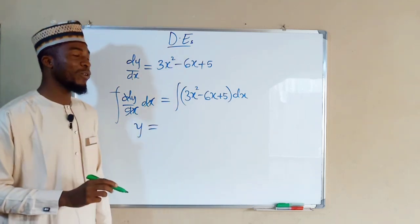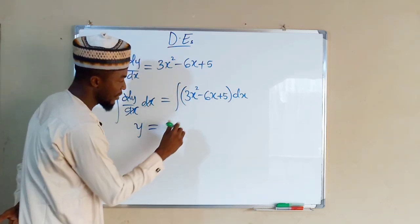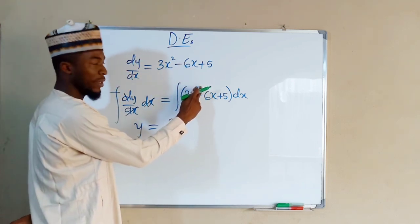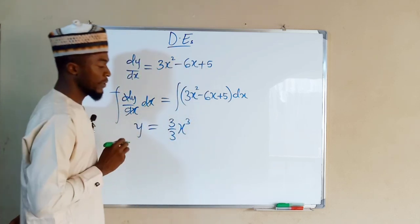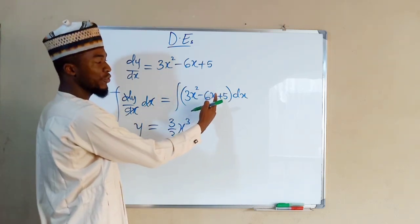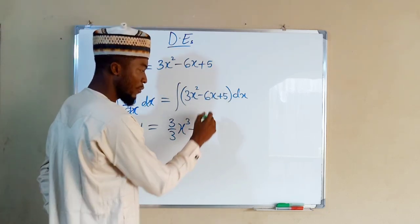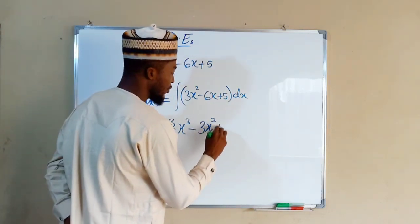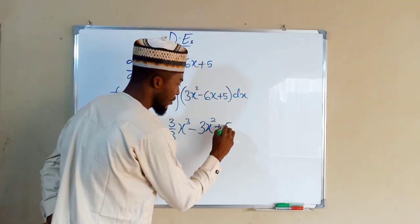On the right-hand side, we are going to integrate term by term. If you integrate the first term, you get three, then increase the power by one, which gives three. Minus: naturally this term has a power of one, increasing it by one makes it two, so we have six over two, which is three, times x to the power of two. The last term is a constant; integrating a constant with respect to x gives five x.